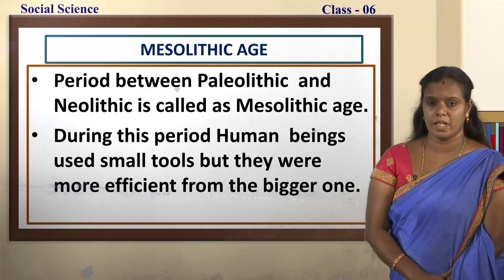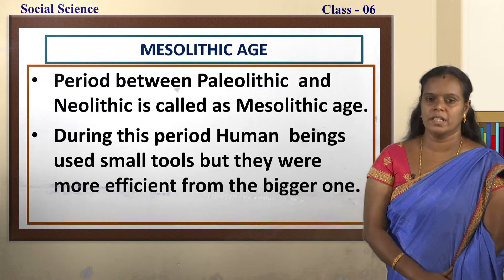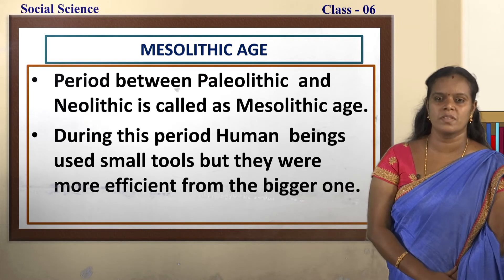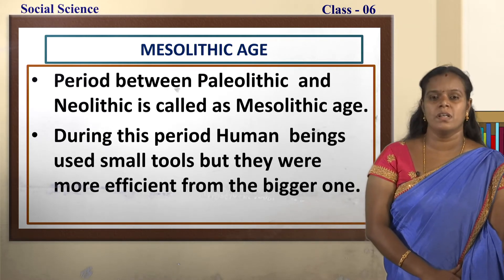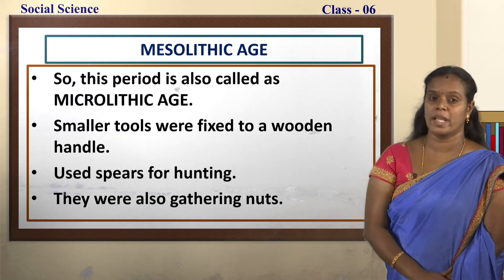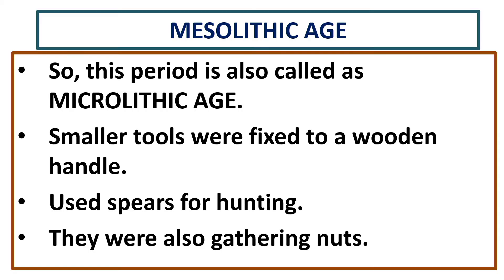The period between Paleolithic and Neolithic age is called as Mesolithic age. During this period, human beings used small tools, but these small tools were more efficient than the bigger ones. So this period is called as Microlithic age — micro means small. The smaller tools were fixed to a wooden handle and they used spears for hunting. A spear is a weapon which had a pointed edge.